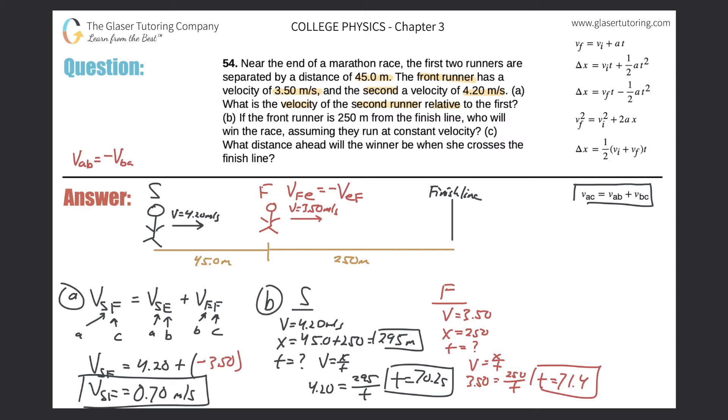So if the clock starts at the same time for both the second and the first runner, the second runner is going to cross that finish line first because the time is less. So to answer the question, who will win the race, the second runner wins.